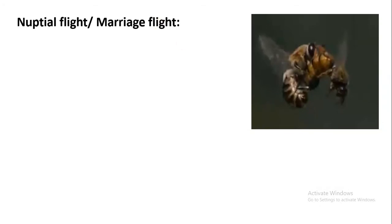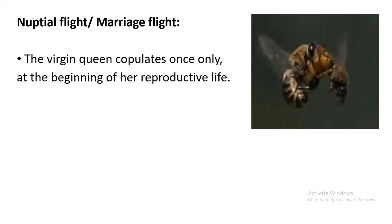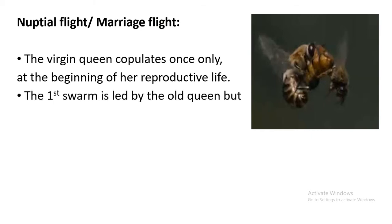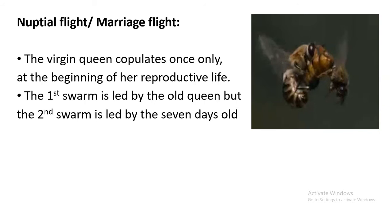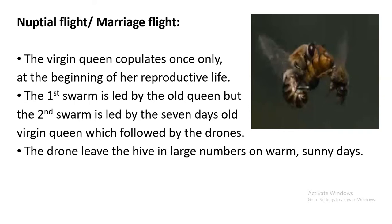Now we will discuss the nuptial flight, also called the marriage flight. The very first time a queen is able to copulate, she is called a virgin queen. The virgin queen copulates only once at the beginning of her reproductive life. The very first swarm is led by the old queen, but the second swarm is led by the seven-days-old virgin queen. The virgin queen is followed by drones, which leave the hive in large numbers on a warm, sunny, clear day.